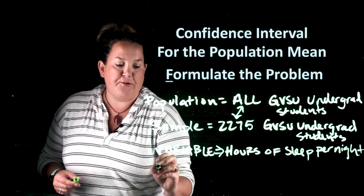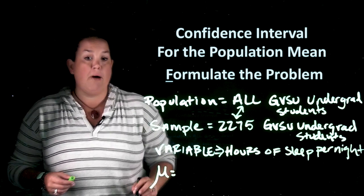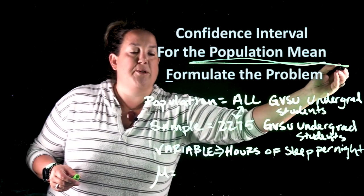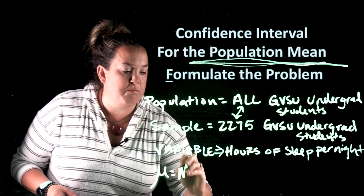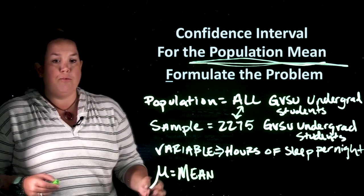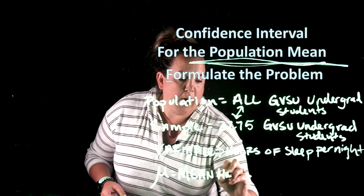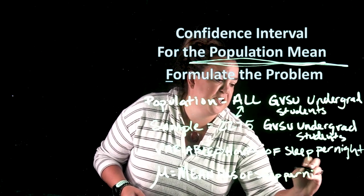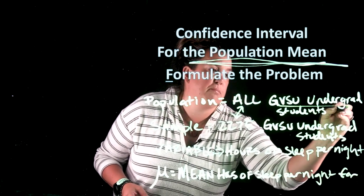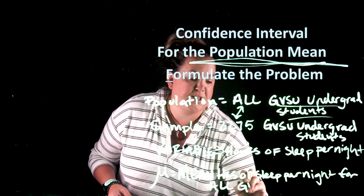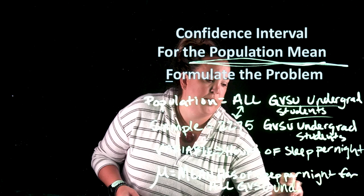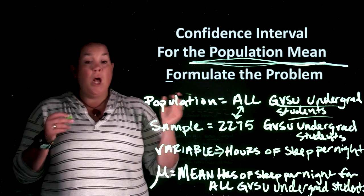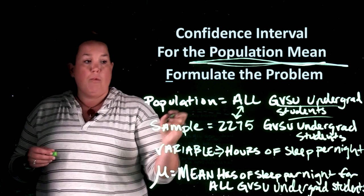The final thing in the Formulate step is to state your parameter of interest. For this problem we use the notation mu, because that's the appropriate notation for the population mean. We write: mu = mean hours of sleep per night, for all GVSU undergraduate students. We'll reference this sample size and this definition of mu when we draw our conclusions.